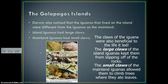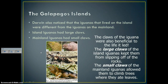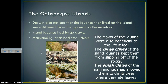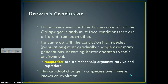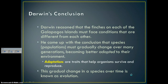He saw something very similar with iguanas. The mainland iguanas were very different from the iguanas that lived on the islands. Island iguanas had very large claws while mainland iguanas had very small claws. Those large claws kept island iguanas from slipping off rocks, while the small claws of mainland iguanas allowed them to climb trees where they ate leaves. Darwin took his work back home, went through his drawings and recordings, and started forming ideas about how all of this happened.